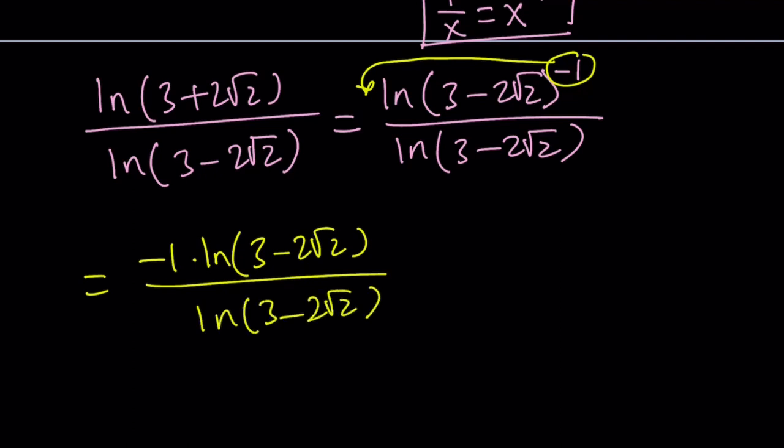But, ln 3 minus 2 root 2 and ln 3 minus 2 root 2 are the same thing, so they cancel out. And, obviously, they're not 0 because ln 1 is 0 and these numbers are not 1. So, the answer would be negative 1 in the simplest form.